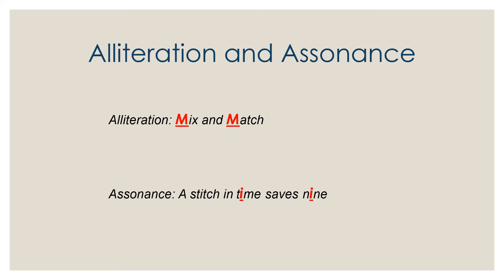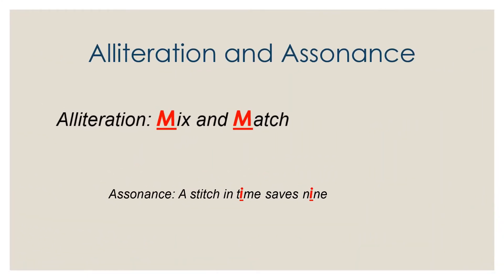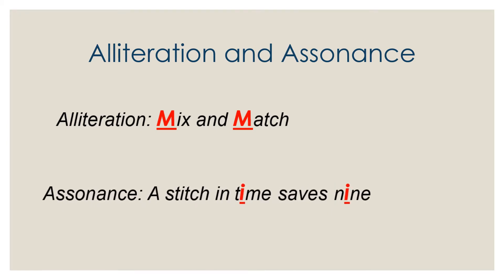Alliteration and assonance: alliteration is the use of the same consonant at the beginning of each stressed syllable. The same definition applies to assonance with a little change — in assonance we only consider the repetition of vowels. This is a phonological device employed to enhance memorability and quotability. Alliteration is also commonly used in book titles to make them more eye-catching and appealing to the ear.